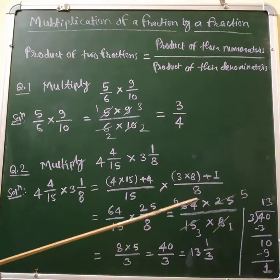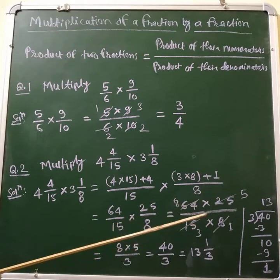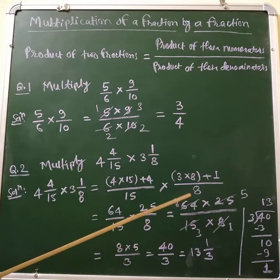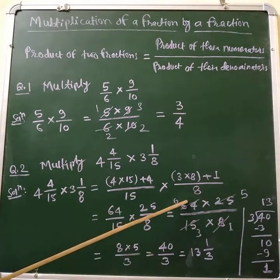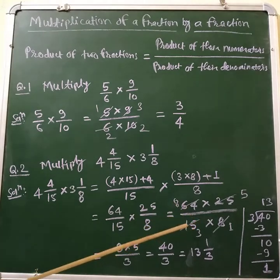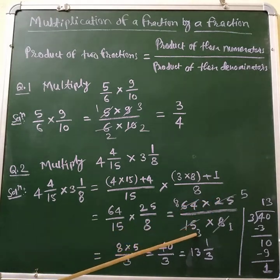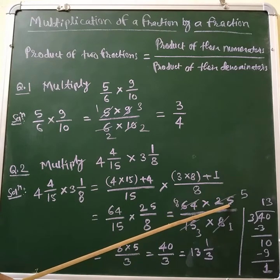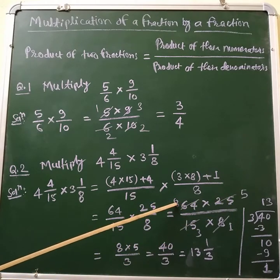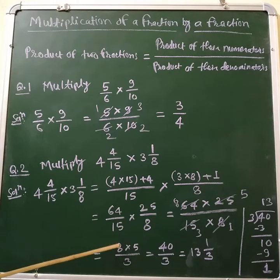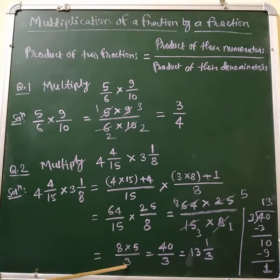Now we check the divisibility of numerator and denominator. 8 and 64 are both divisible by 8: 8 ones are 8 and 8 eights are 64. Then 15 and 25 are both divisible by 5: 5 threes are 15 and 5 fives are 25. So in the numerator we have 8 multiplied by 5 is 40, and the denominator is 3. This gives us 40/3.